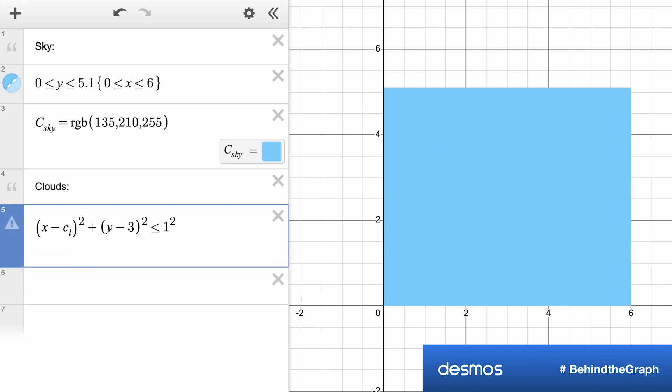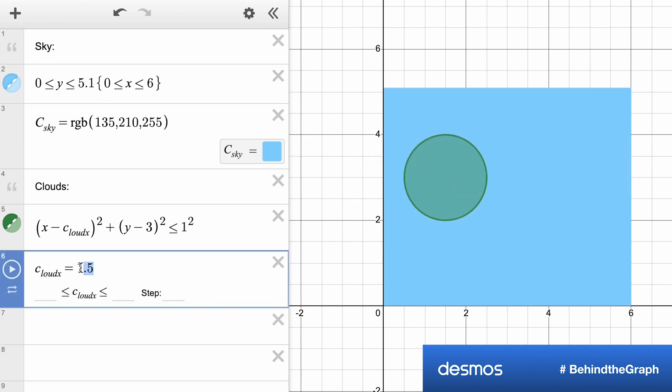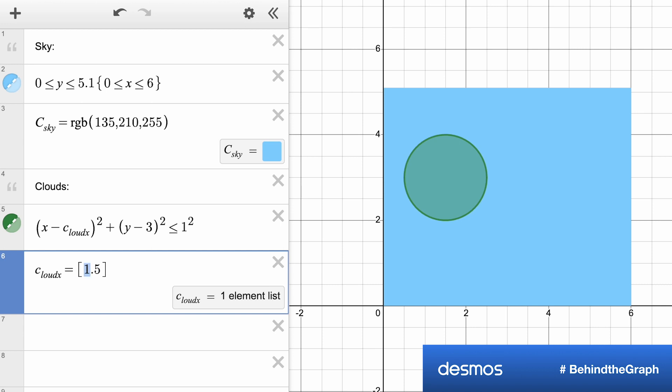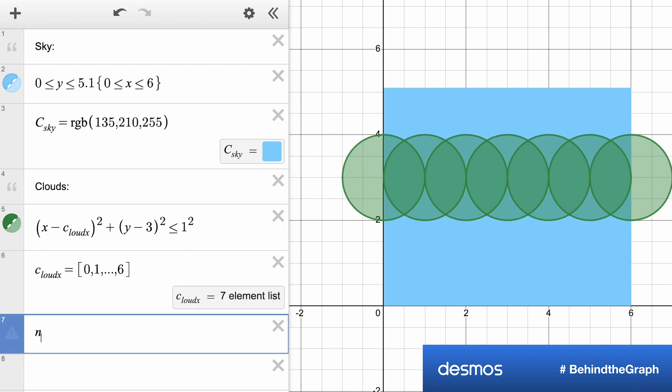Now to get some flexibility on where these clouds show up, we're going to introduce some variables. So we'll let cloud_x be the side to side position of these clouds, but I don't just want one. I want an abundance of clouds. We're going to bring in a list here. So notice that notation from zero to one dot dot dot means continue on this pattern. So that gets us seven clouds,